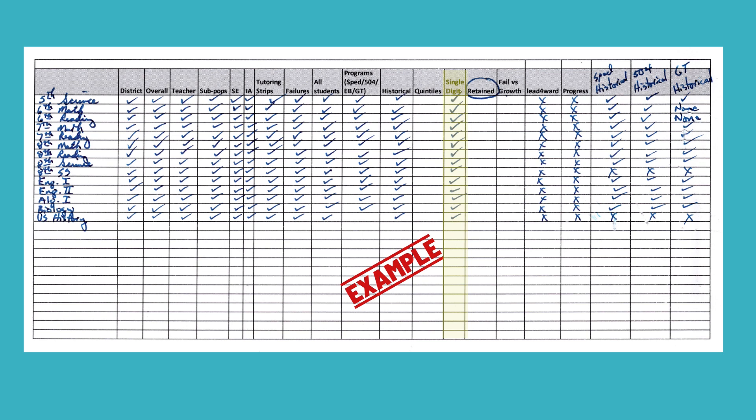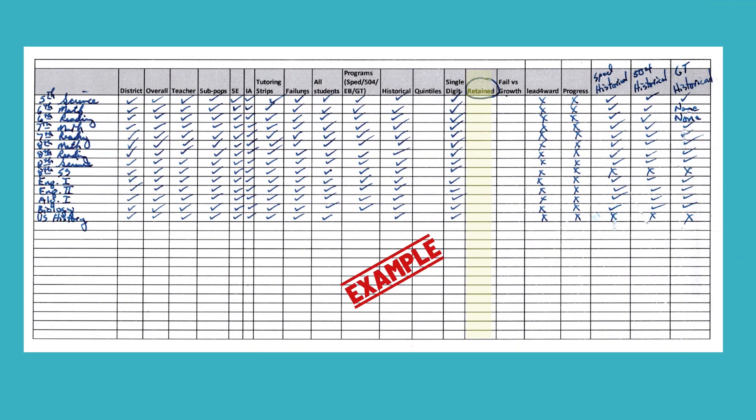I call this 'single digits' because if we've got kids scoring in single digits on an assessment, we have a problem, and I need to know how big that problem is. Sometimes there are no single digits — rock on. Sometimes there's a lot — that's a problem. So all of these columns are to bring out information and tell you if we're going to protect something, solve something, or fix something. I also want to know about the kids who've already been retained somewhere in their educational career — especially if they're homegrown. If we retained them in kindergarten and first, I want to know how they're doing in third, fourth, and fifth. And they should be doing better, and if they're not, we've got an issue to deal with.